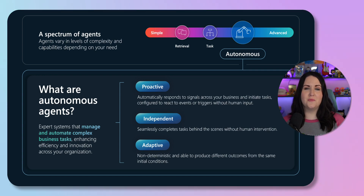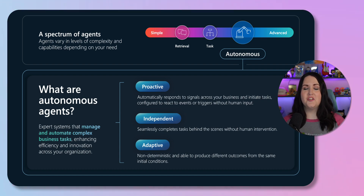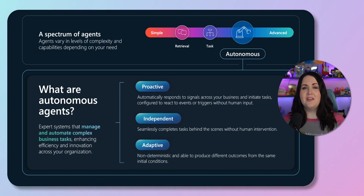Agents exist on a spectrum with a variety of capabilities, and all agents have the same set of components, but it's your specific use case and complexity that determines where that sits across the spectrum. On one side of the spectrum, we have agents focused on retrieval. These are designed with specific instructions on how to behave, their personality, their overall objectives, and they follow predetermined guidelines that you set.